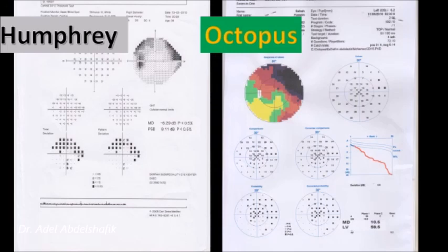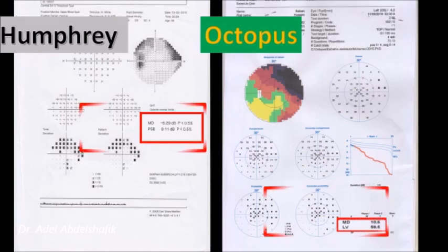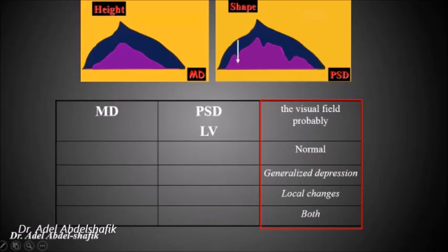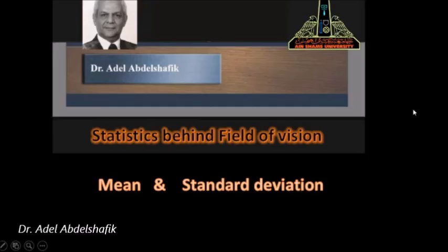Did you know that if you look at the printout, whether in Humphrey or Octopus, there are two values: the mean deviation and the pattern standard deviation in Humphrey, or the mean deviation and loss variance in Octopus. These two values can tell you exactly what's going on — whether there is a normal field, a generalized depression, localized changes, or both localized and generalized changes in the field.